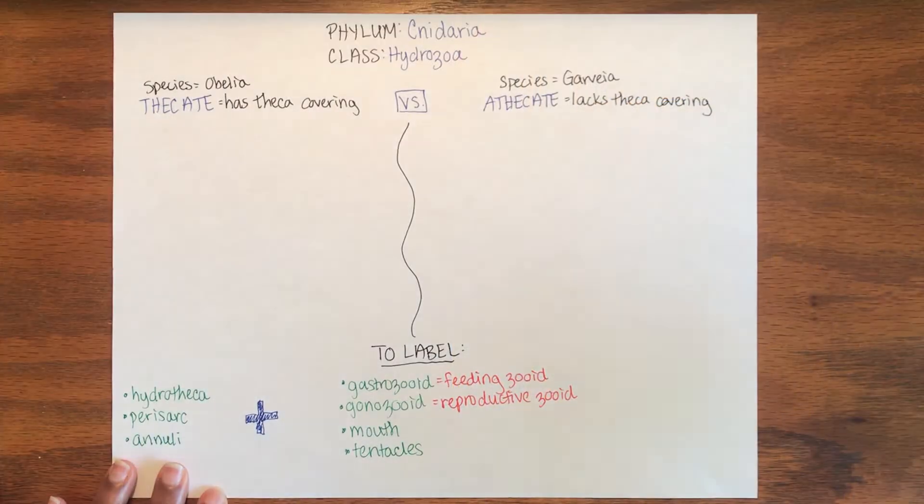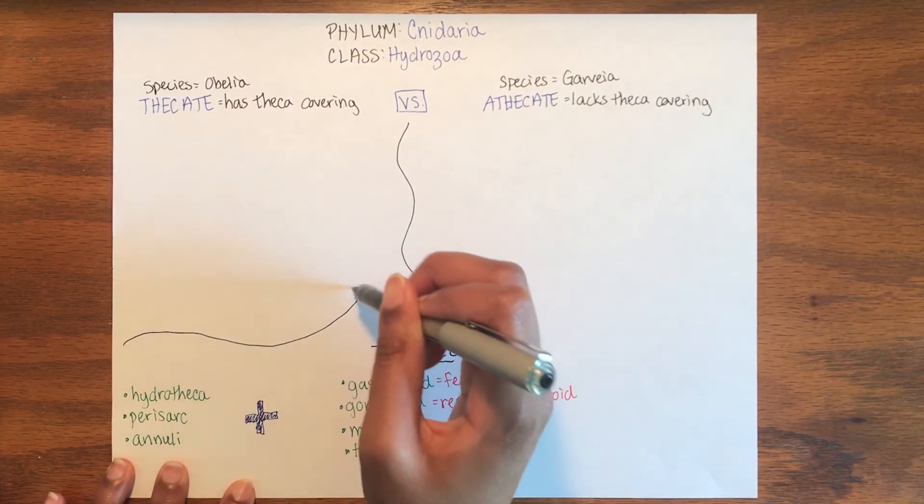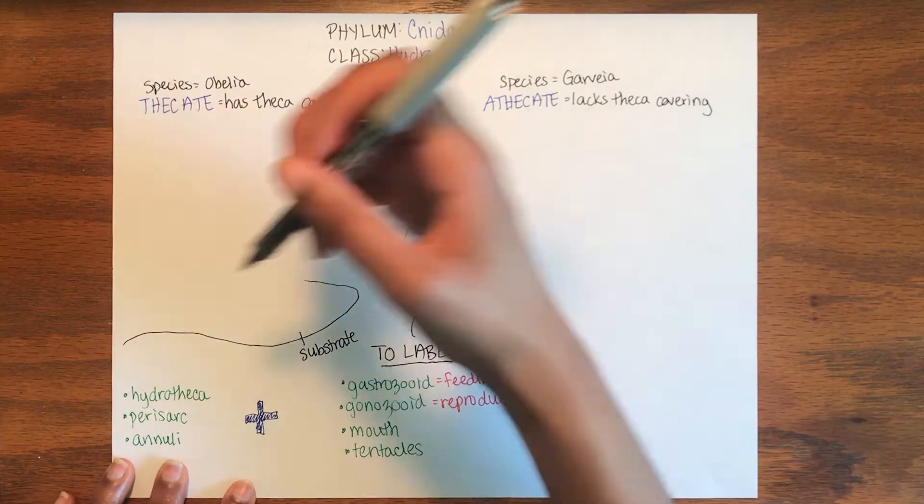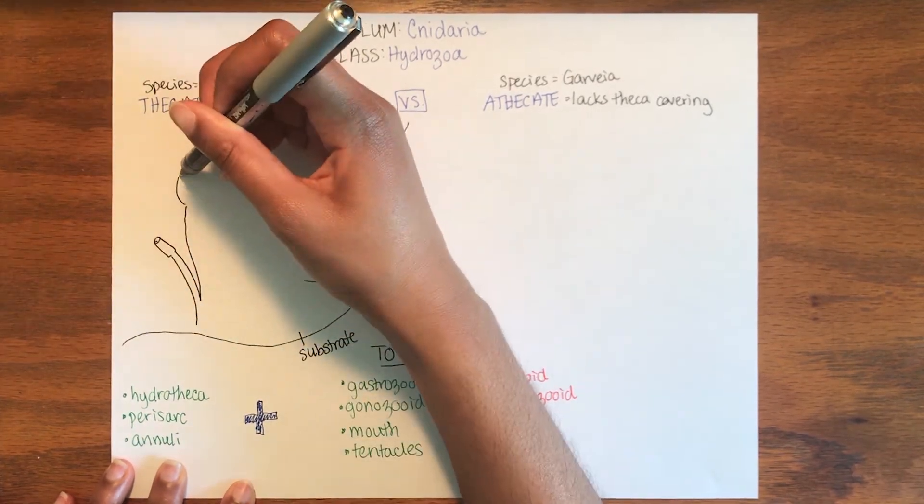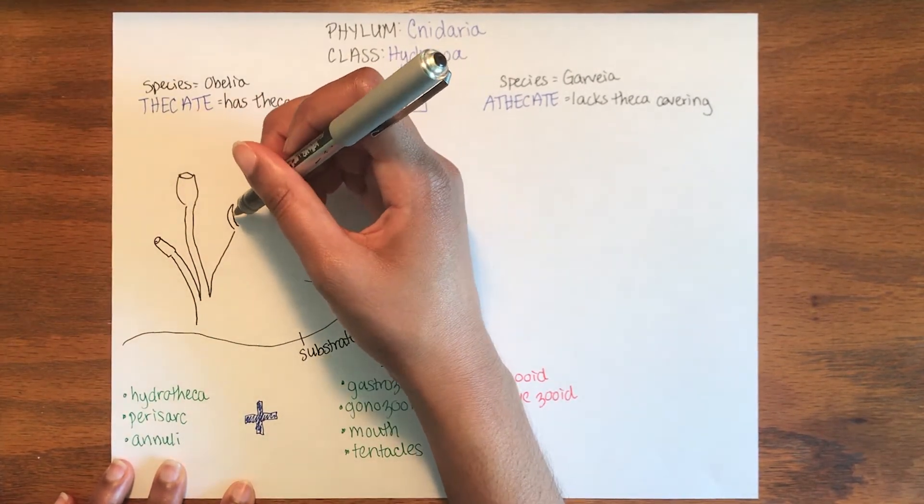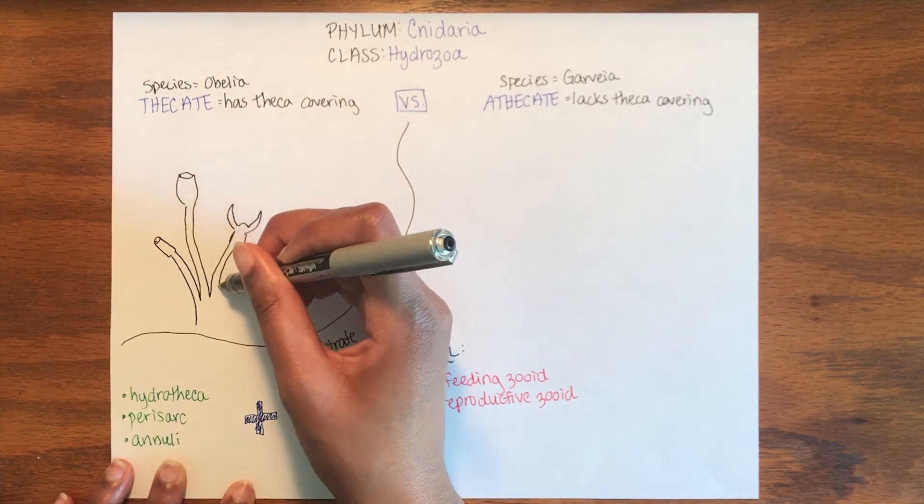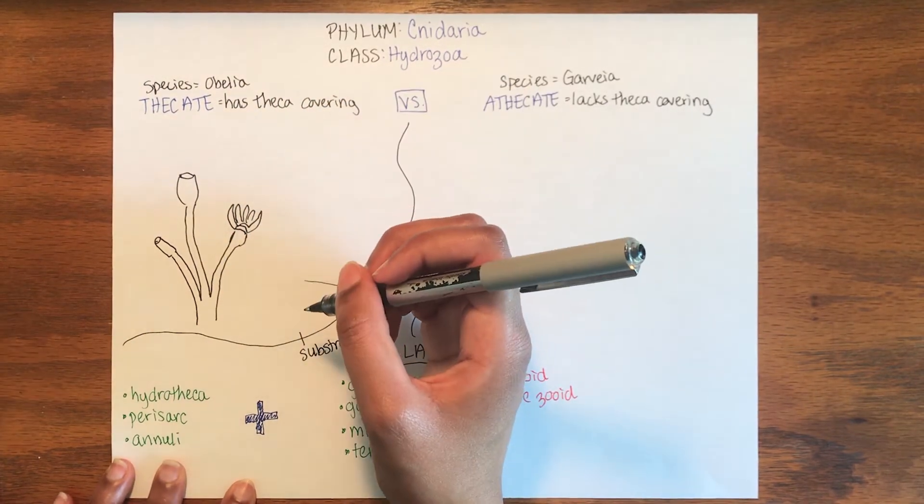Now that you've had a chance to try it on your own, let's draw them together. Hydroids are usually found attached to some kind of substrate. We can start by drawing the branch stalks of the hydroid and then labeling the outer features.